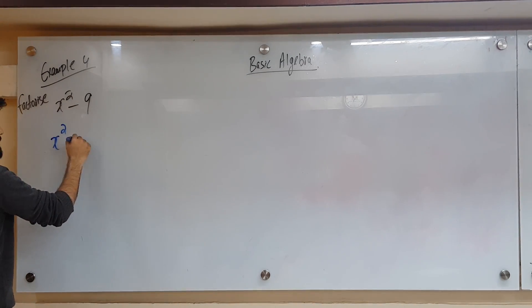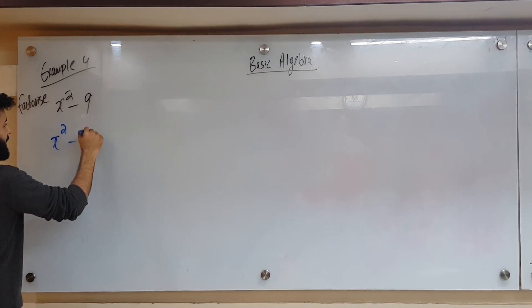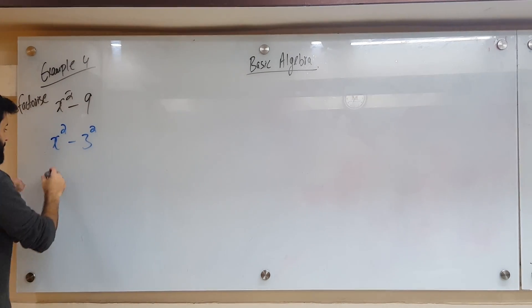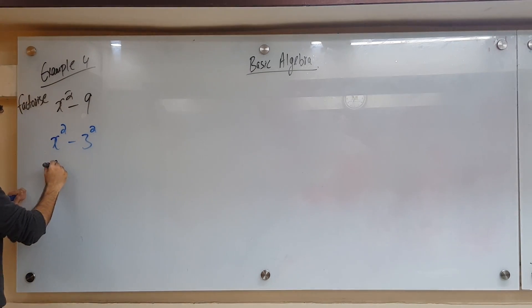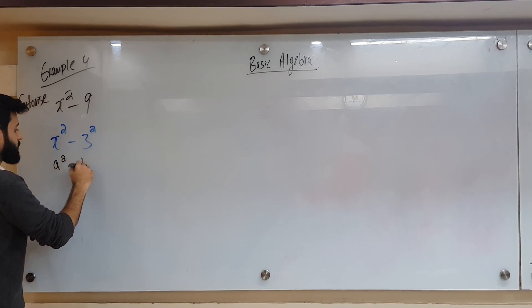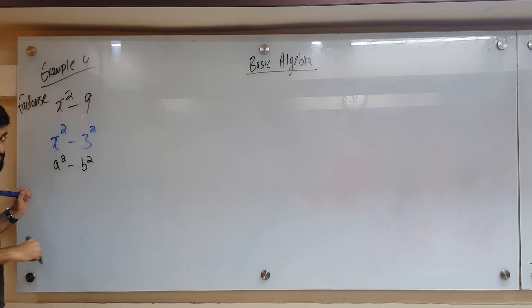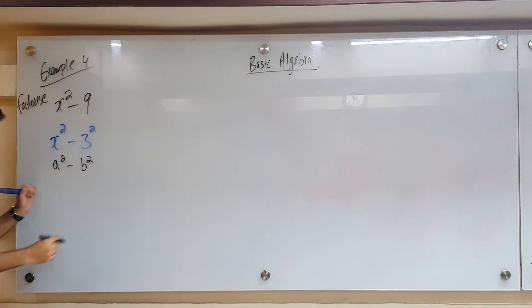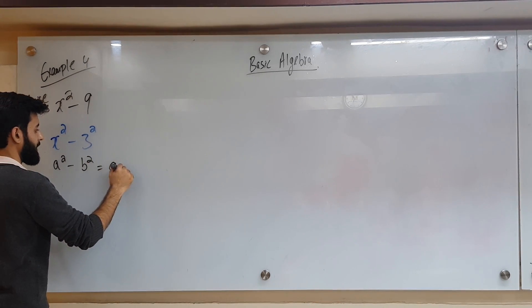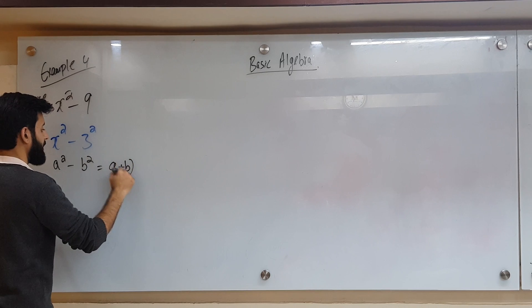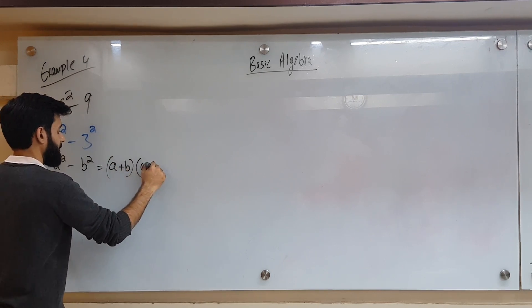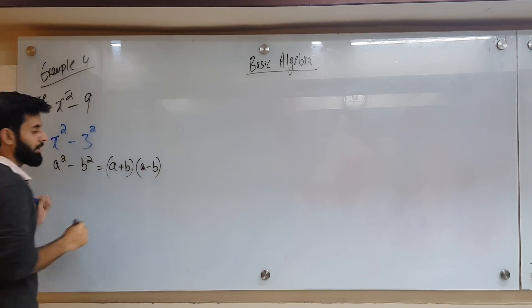So, can I write x squared minus 9 as x squared minus 3 squared? Yes, of course I can. So what does this become? This becomes something like a squared minus b squared. Yes — and what is a squared minus b squared equal to if I factorize it?